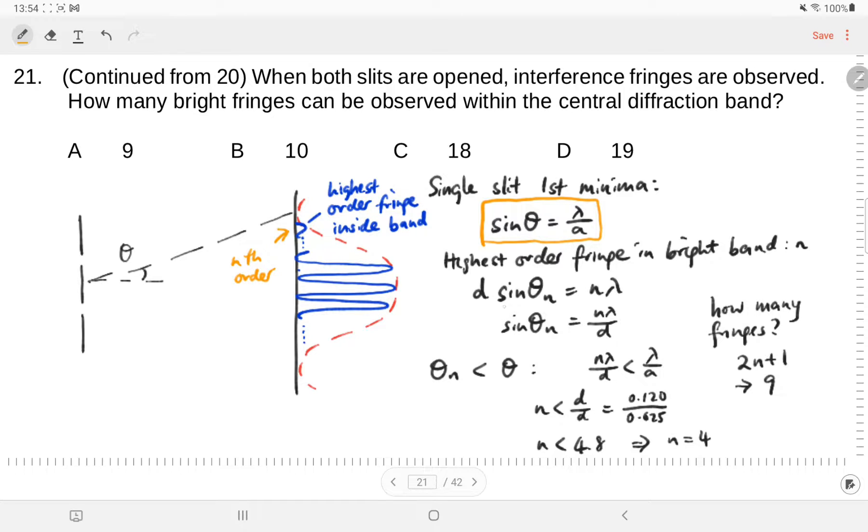We can write out another equation. This time it is d sine theta_n equals n lambda. You see, if we were to observe this nth bright fringe, then it means that the angular position of theta subscript n must be smaller than the angular position of the first order minima for the diffraction pattern.